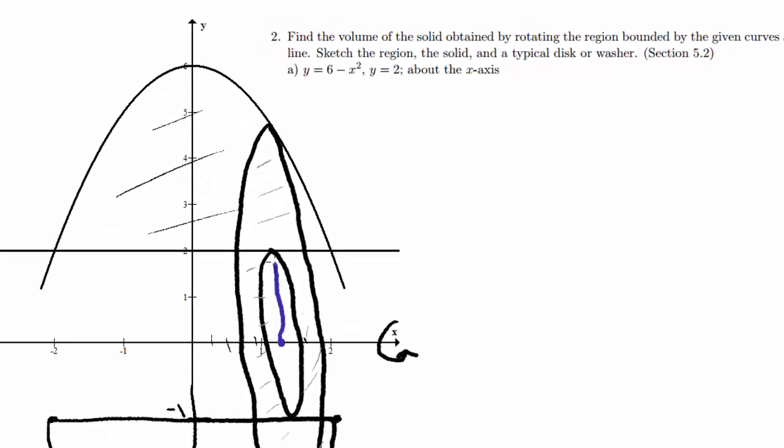Now I need to mark the inner radius, which is right here. That's little r of x equals 2. And then I need to do big R of x, which I kind of put in the lighter color. That's big R of x equals, and that's the parabola 6 minus x squared.